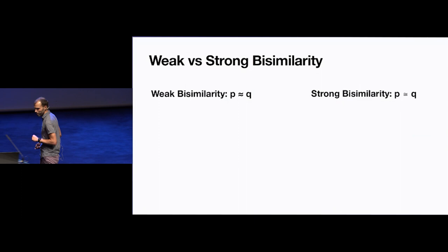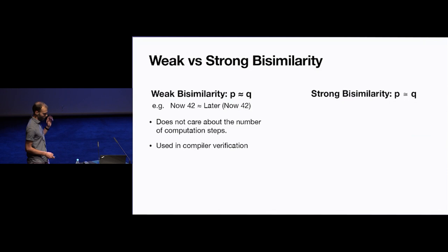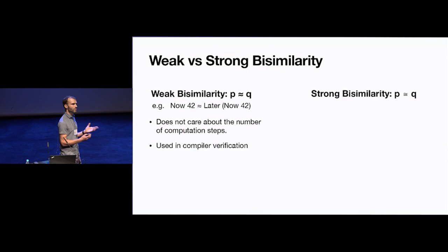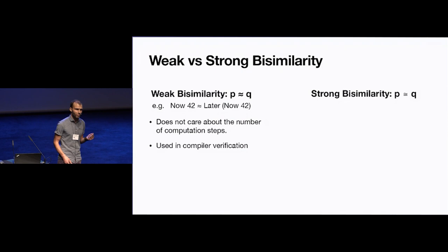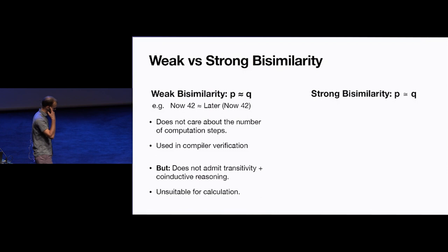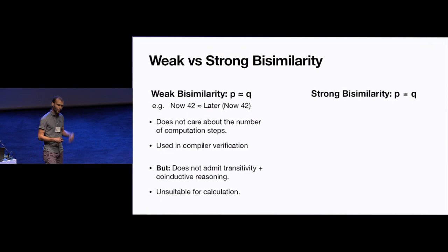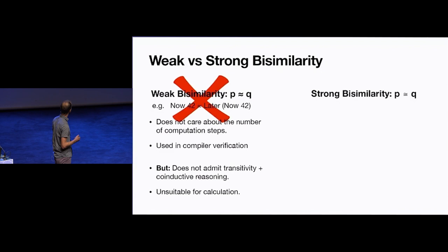There are in principle two choices of bisimilarity: a weak kind and a strong kind. The weak version is the one usually found in compiler verification, because it does not care about the number of steps on both sides — `now 42` is weakly bisimilar to `later (now 42)`. This makes sense since compiled code does not necessarily take the same number of steps as the source. But unfortunately it's no good for calculation, because we cannot reason using both transitivity and coinduction in our proofs, making it completely useless for calculation.